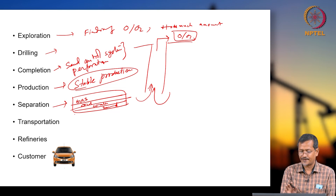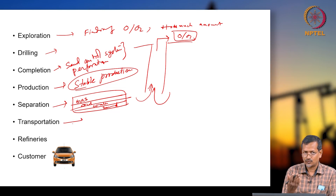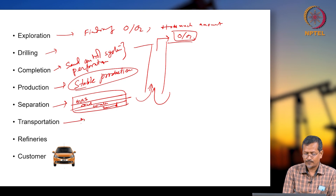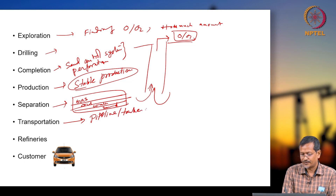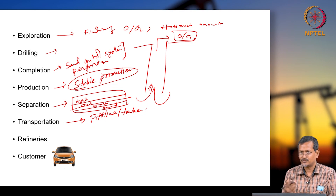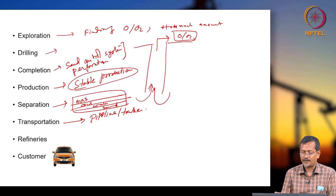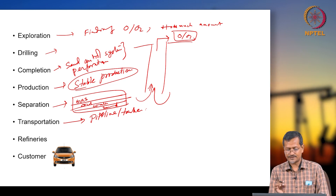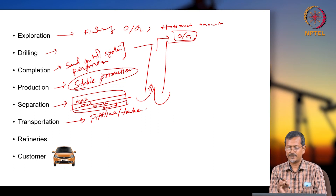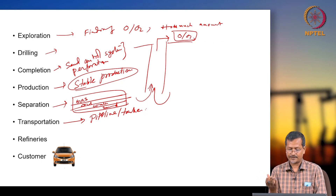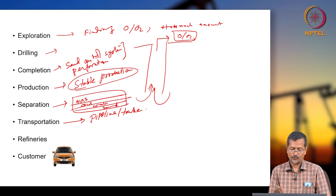Once you have separated gas, oil, water, and sand: gas can go through a gas pipeline, oil may go through an oil pipeline or tanker. Water has to be disposed of since it is not economical. Sand can also be disposed, but you must remove all hydrocarbons and ensure you are not harming aquifer zones or drinking water zones.